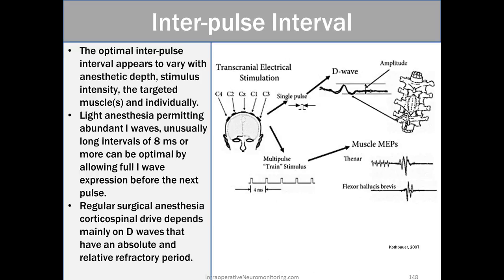Interpulse interval. The optimal interpulse interval appears to vary with anesthetic depth, stimulus intensity, and the targeted muscles and the individual you're stimulating in. Light anesthesia permitting abundant eye waves. Unusually long intervals of eight milliseconds or more can be optimal by allowing full eye wave expression before the next pulse. So if we were having a mildly sedated patient and you're running motors which almost never happens you could increase your interpulse interval way higher than what you typically would to get better responses. In my experience I'm typically running MEPs on a deep patient mainly because this is a very painful stimulation that we're giving them and we don't want to do it on an awake patient or somebody can remember it. So scale back down to that one to four interstimulus interval.